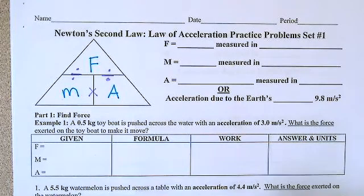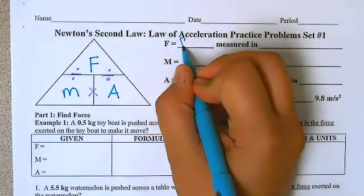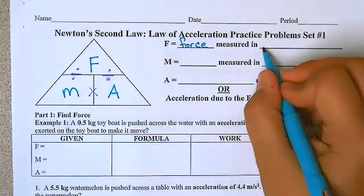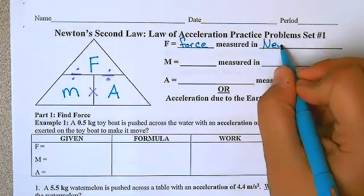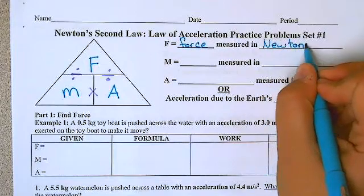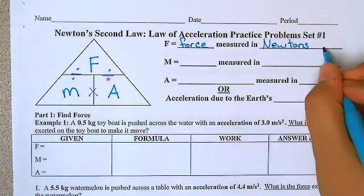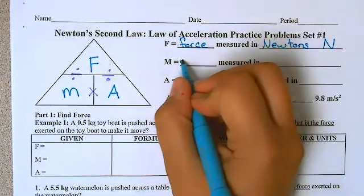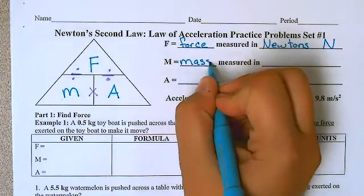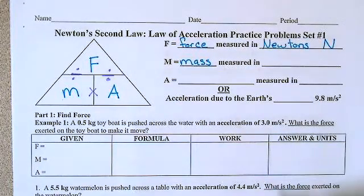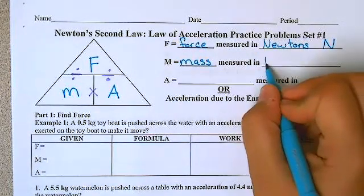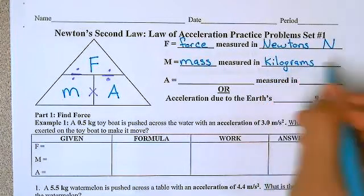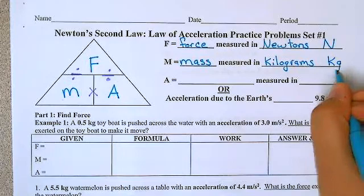First, F is for force and the force is measured in Newtons, represented by the capital letter N. M stands for the mass. Mass is measured in kilograms, which is kg.